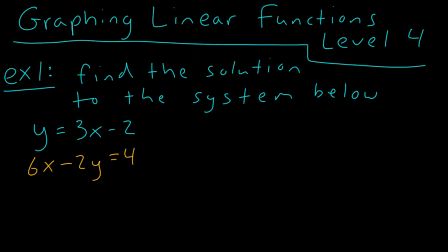Welcome to graphing linear functions level four. For example one, we want to find the solution to the system: y equals three x minus two, which is in slope-intercept form, and six x minus two y equals four, which is in standard form from the level three video.